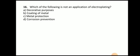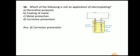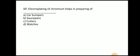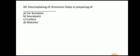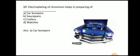Next question: which of the following is NOT an application of electroplating — decorative purpose, coating of metal, metal protection, or corrosion prevention? Decorative purpose, coating of metal, and metal protection are all purposes of electroplating, whereas corrosion prevention is not an application of electroplating. Next question: electroplating of chromium helps in preparing car bumpers, saucepans, cutlery, or watches? The answer is car bumpers. Here you can see the car bumper being electroplated with chromium.